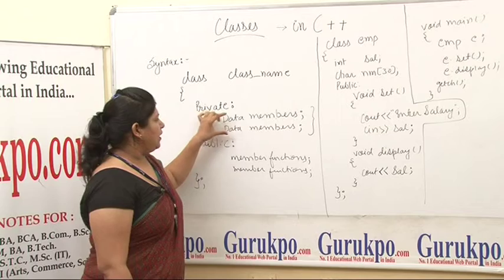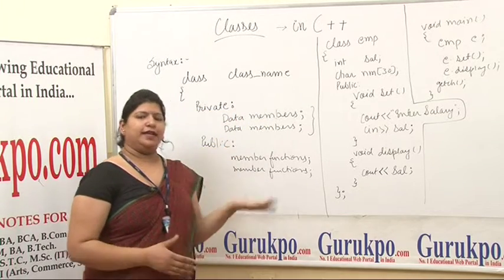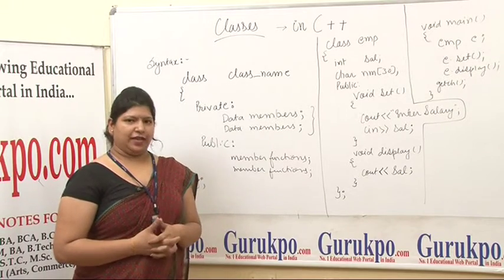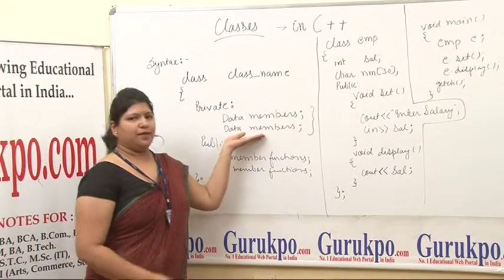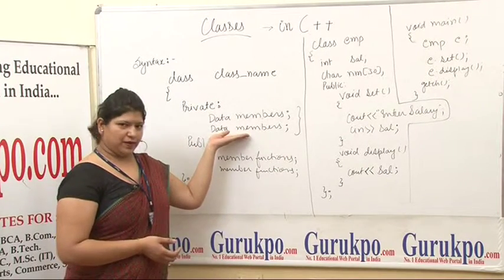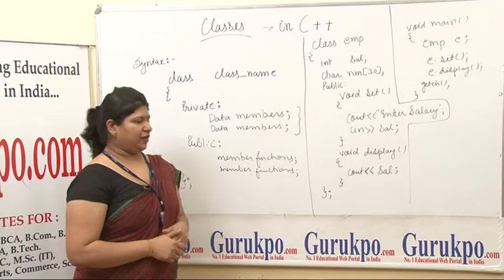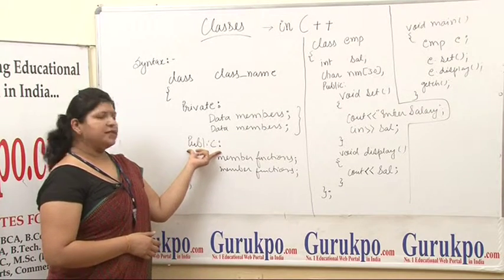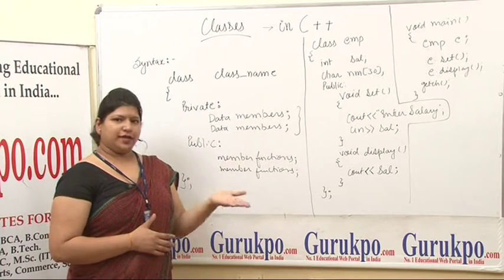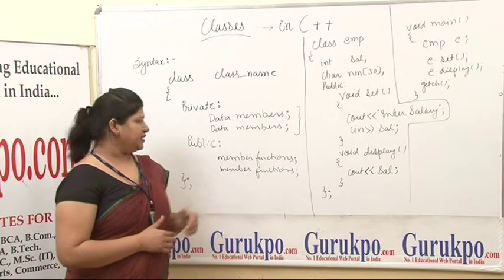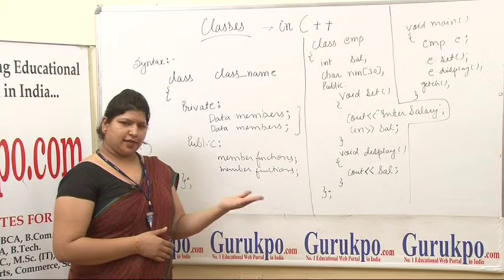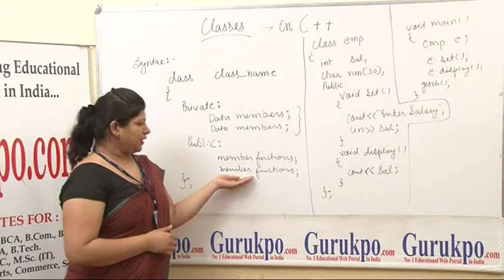Now, first we have data members. Just as we declare variables like 'int a' in the main function, when you declare variables inside a class you call them data members. The second scope is 'public'. Private members are not accessible outside the class, but public members can be accessed by other classes.